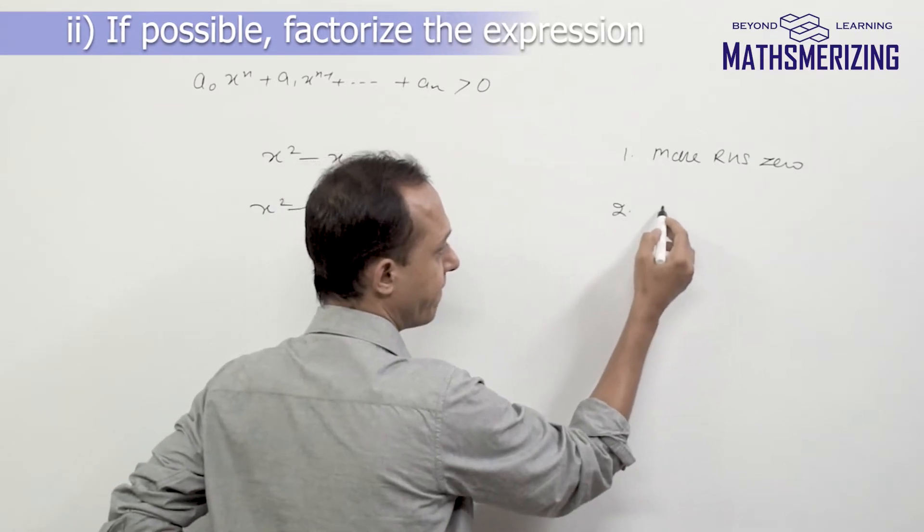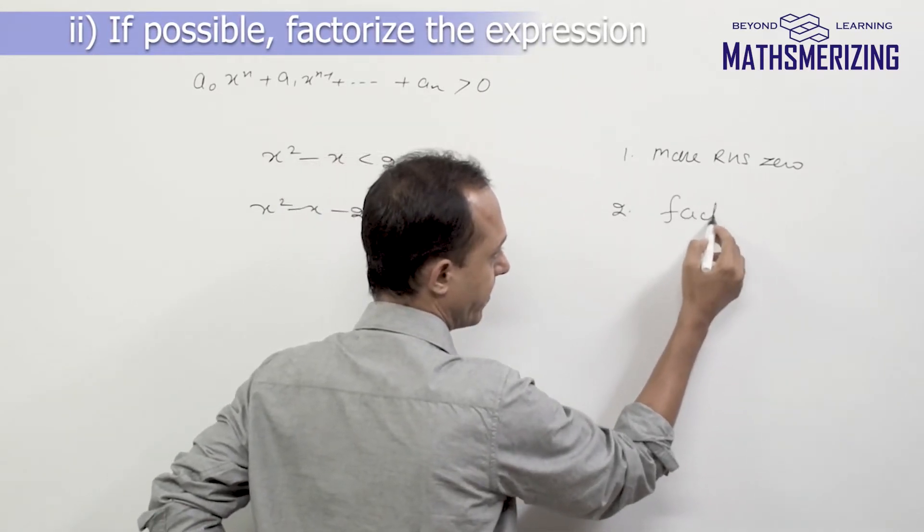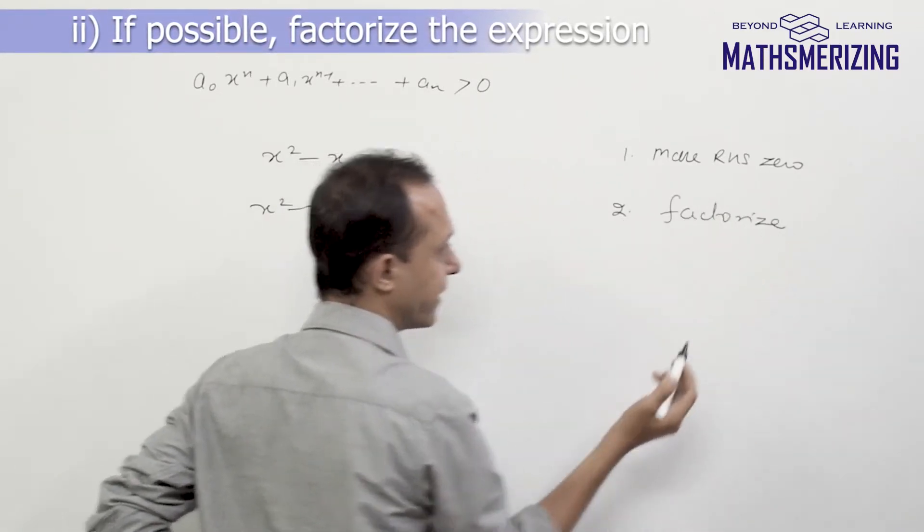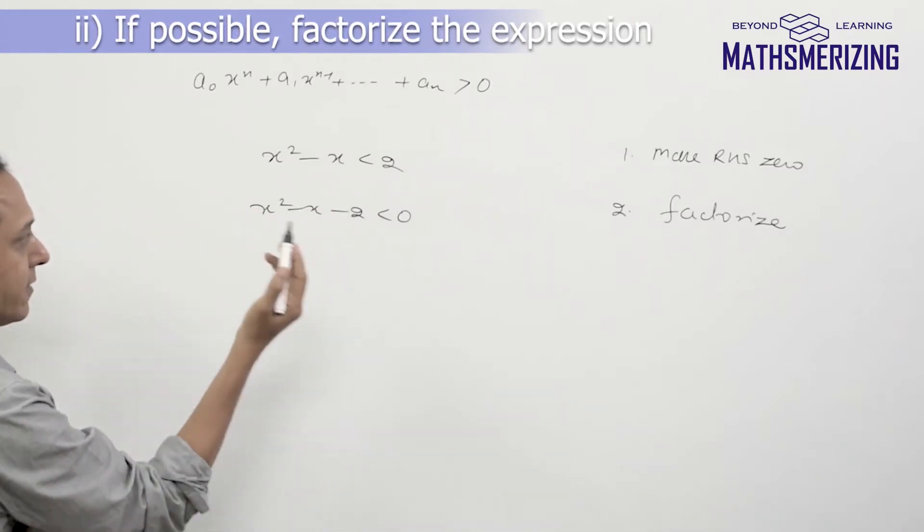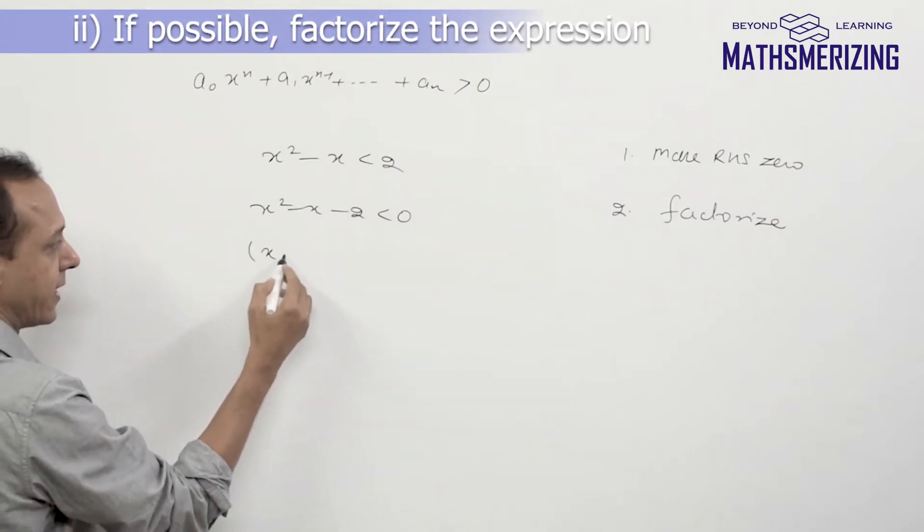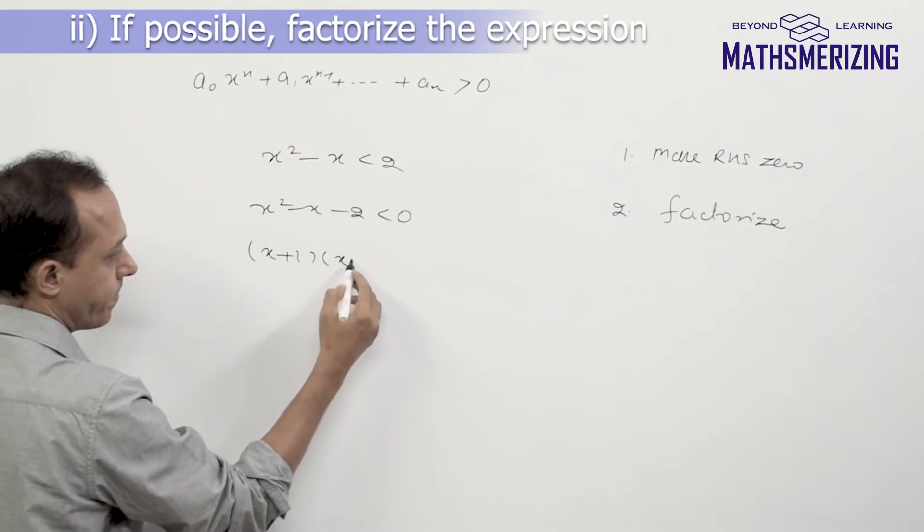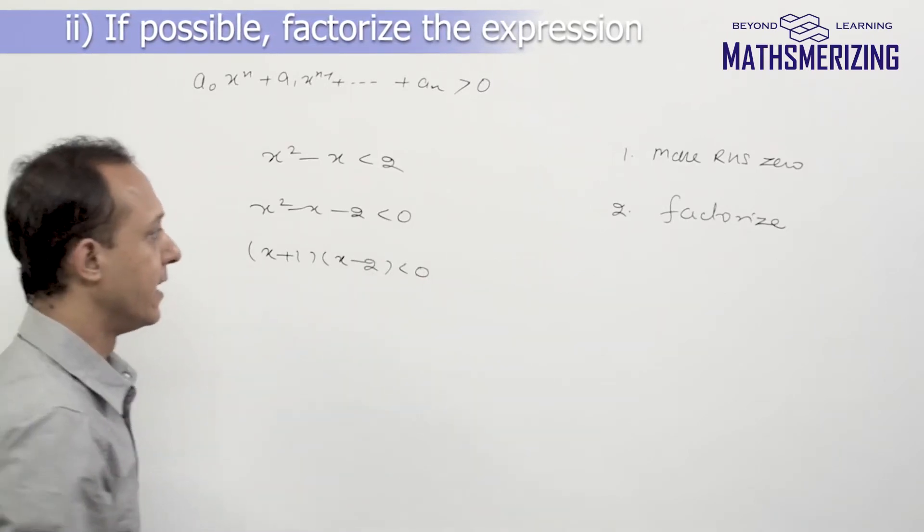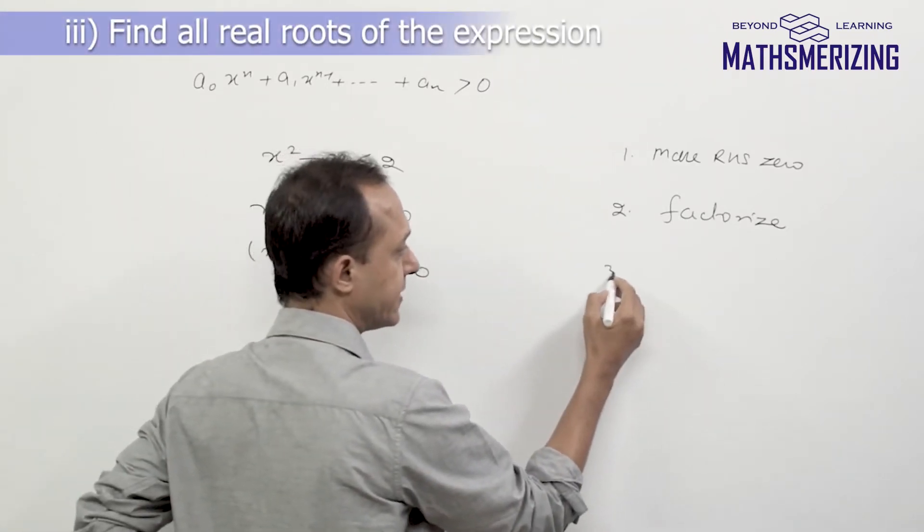Now the second step is if possible factorize. So if you can factorize, just factorize and if you cannot, just leave it there. So I'll get (x + 1)(x - 2) and it should be less than 0.